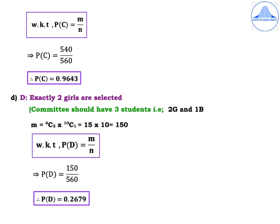Substituting in the probability formula P(C) = M by N, we get P(C) = 540 by 560. Therefore, P(C) = 0.9643.